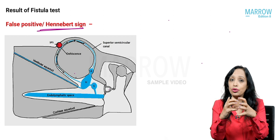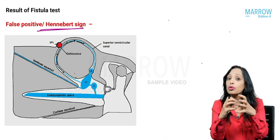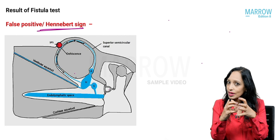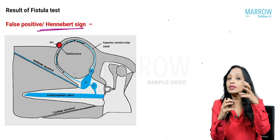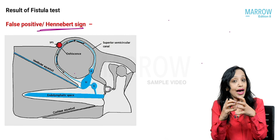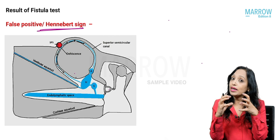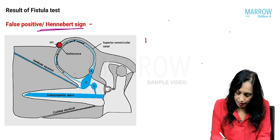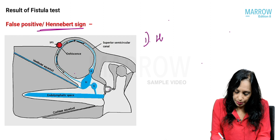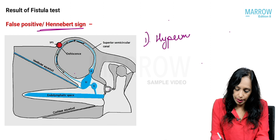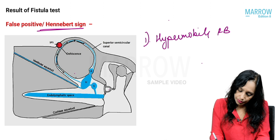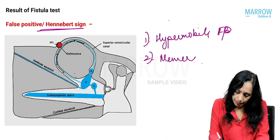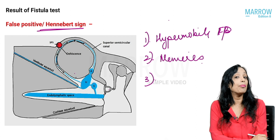In Hennebert's sign, the inner ear is stimulated because the footplate is very close — there is close proximity between the footplate and the utricle and saccule. Pressure changes that are not normally supposed to stimulate the utricle and saccule end up stimulating them. This close proximity happens when the utricle and saccule are dilated and very close to the footplate, as in Meniere's disease, or when the footplate is very hypermobile. So false positive fistula is seen in hypermobile footplate or in Meniere's disease.